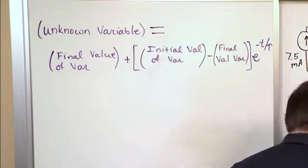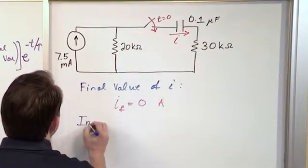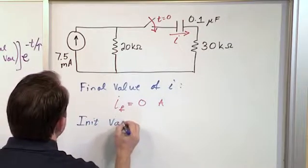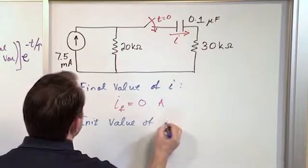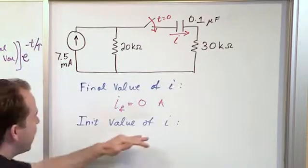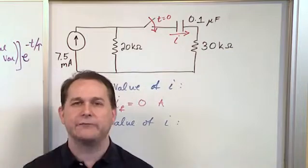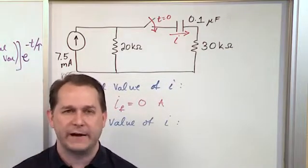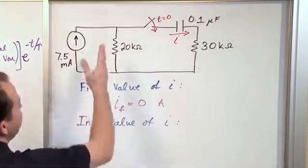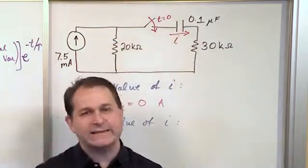Now let's turn our attention to the initial value. What is the initial value of the current i? And what I mean by initial value, I mean a nanosecond after that switch closes. When the switch closes, this capacitor for a split second looks like a